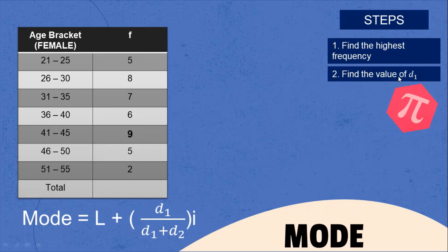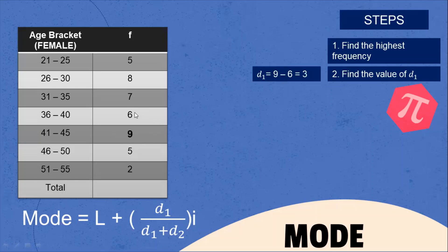Next step, find the value of D₁. D₁ is equal to the highest frequency minus the frequency above it. That is 9 minus 6, which equals 3. So D₁ = 3.